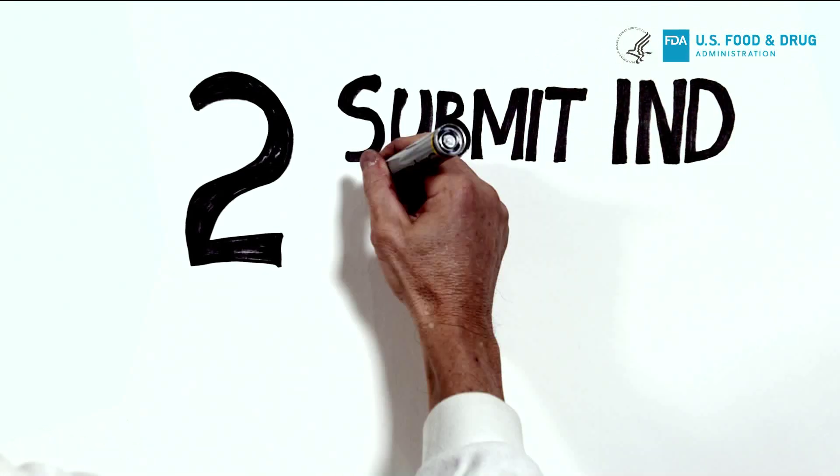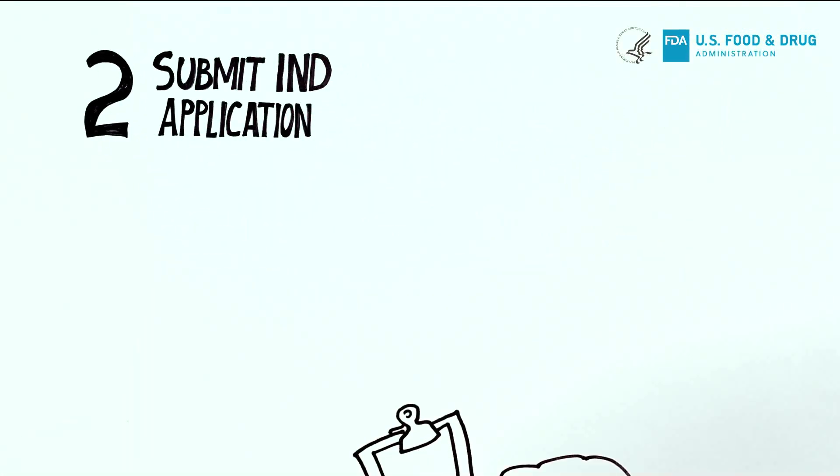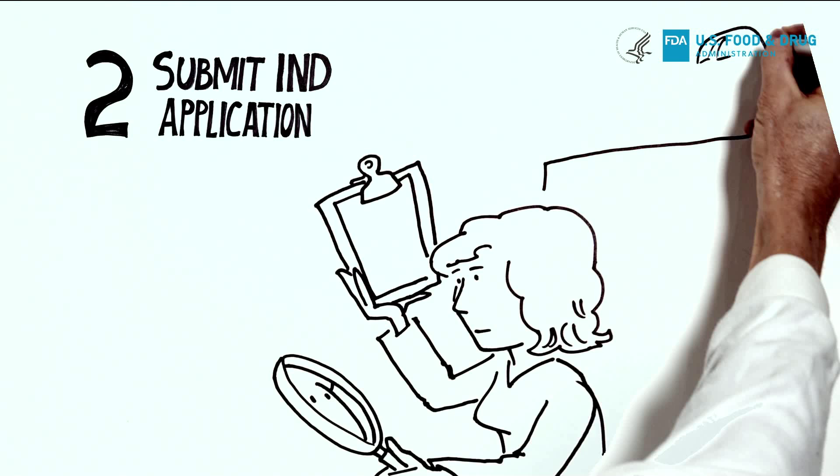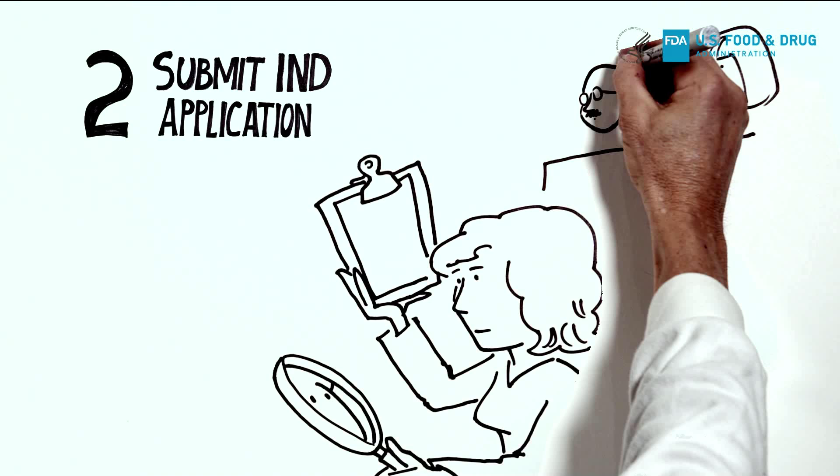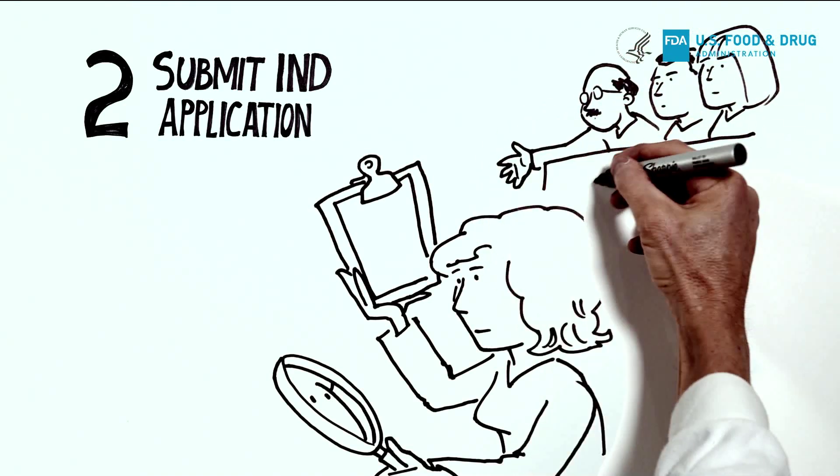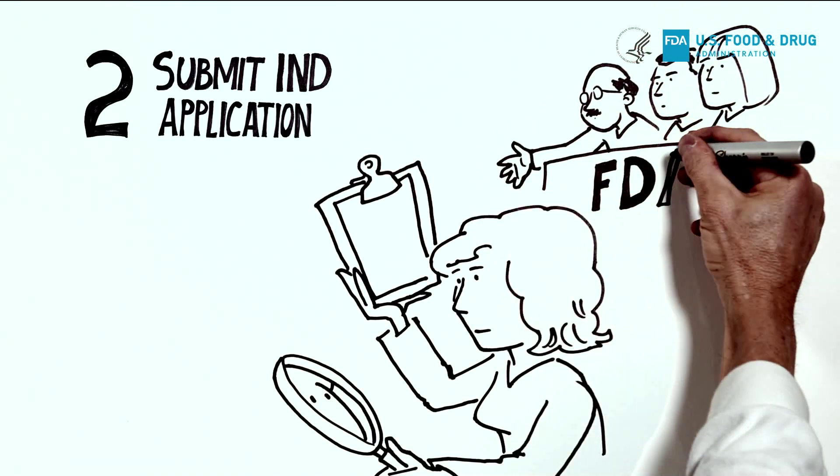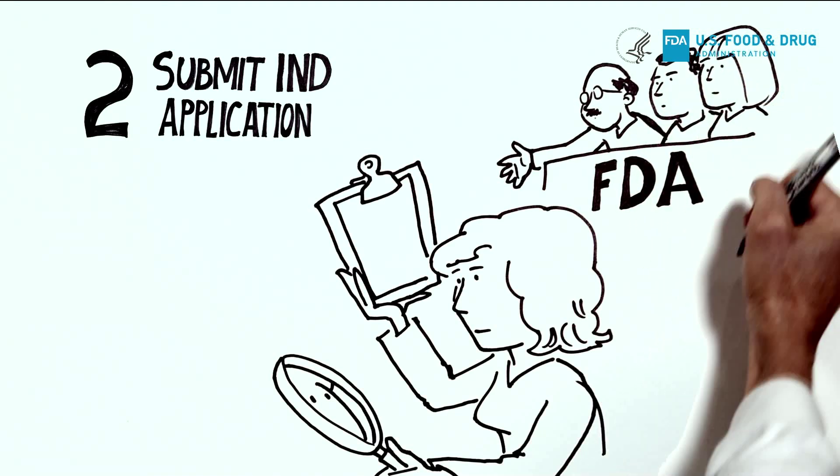The drug sponsor submits an investigational new drug application, an IND, to the FDA based on the results of the initial testing. The application is required to include the drug's composition as well as the details of its manufacturing. The IND presents a plan for testing the drug on humans.